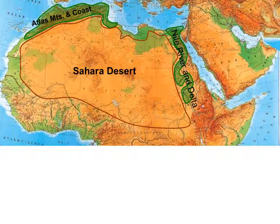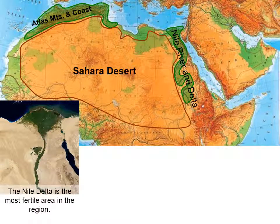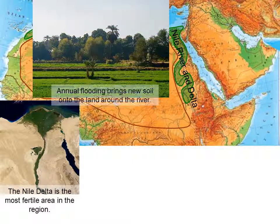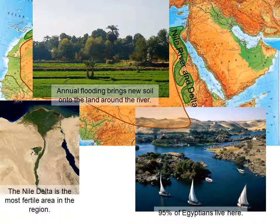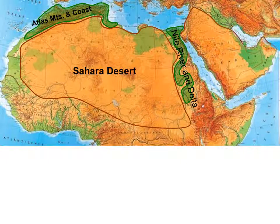The Nile River and its delta is the most fertile area in the region. Annual flooding brings new soil onto the land around the river. 95% of Egyptians live here, either along the river or in the delta.